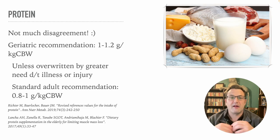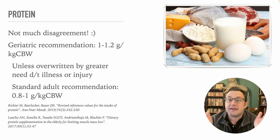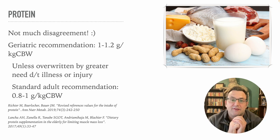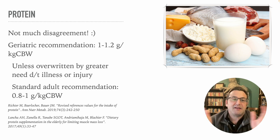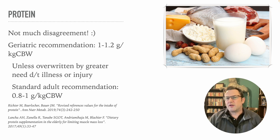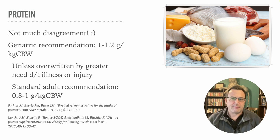I'll start with protein. There's not much disagreement in what protein needs are for the elderly — note that, this is an exciting moment. The geriatric recommendation overall is 1 to 1.2 grams per kilogram of current body weight.